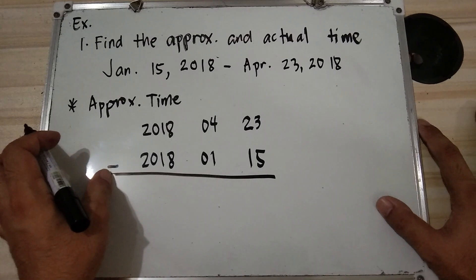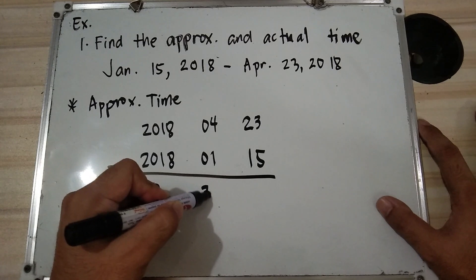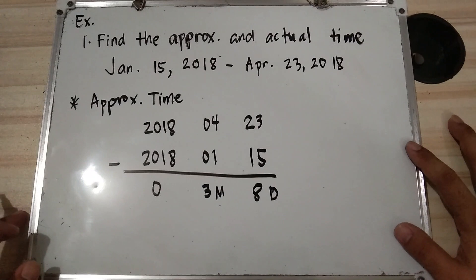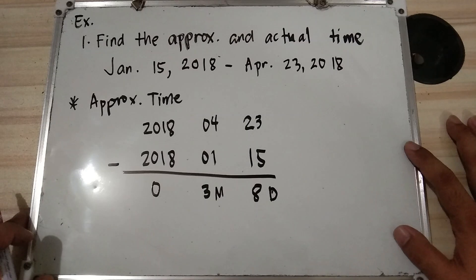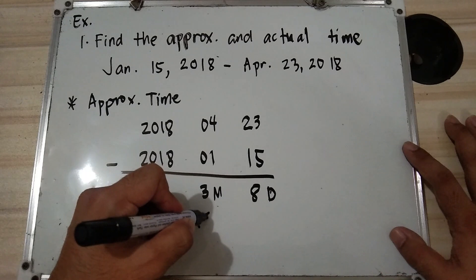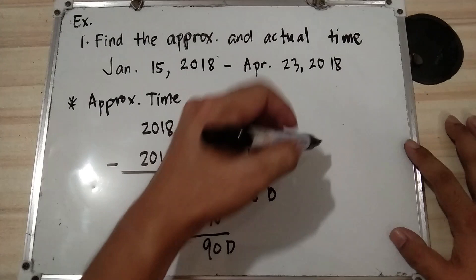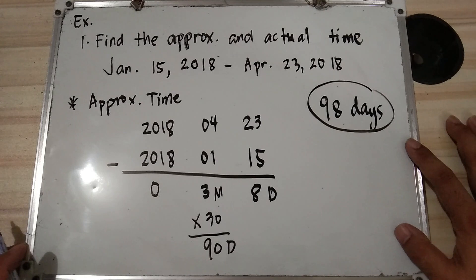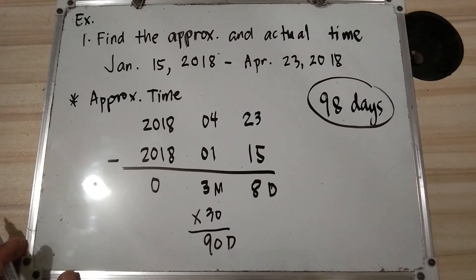Subtracting: year difference is 0, months: 4 minus 1 is 3 months, days: 23 minus 15 is 8 days. So we have 3 months and 8 days. For approximate time, 1 month equals 30 days, so 3 months times 30 equals 90 days, plus 8 days equals 98 days. So the approximate time from January 15, 2018 to April 23, 2018 is 98 days.